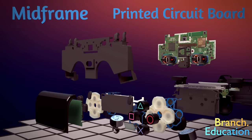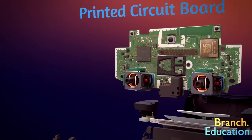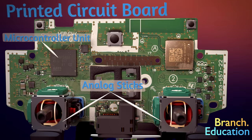Next is the mid-frame and below that the primary printed circuit board or PCB. On the top side of the circuit board are a number of components such as the microcontroller unit, which are the brains of the controller.